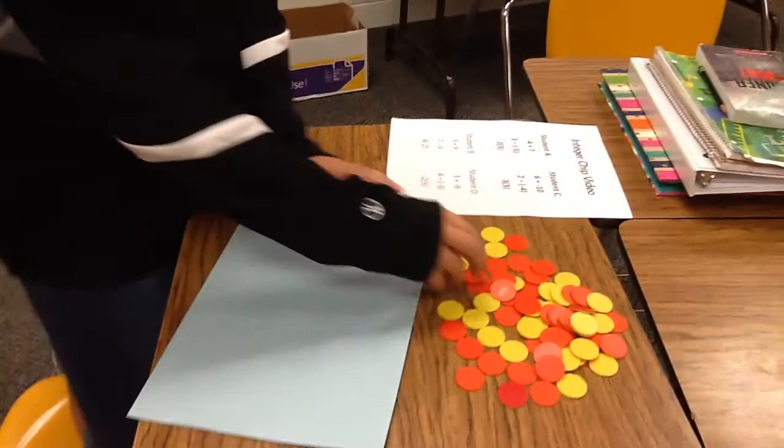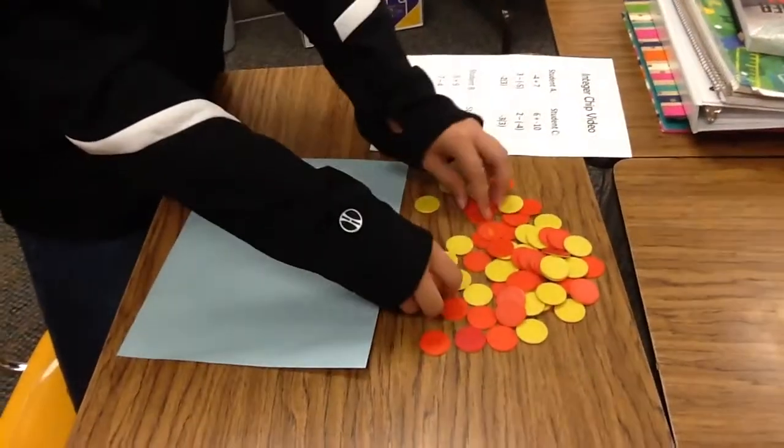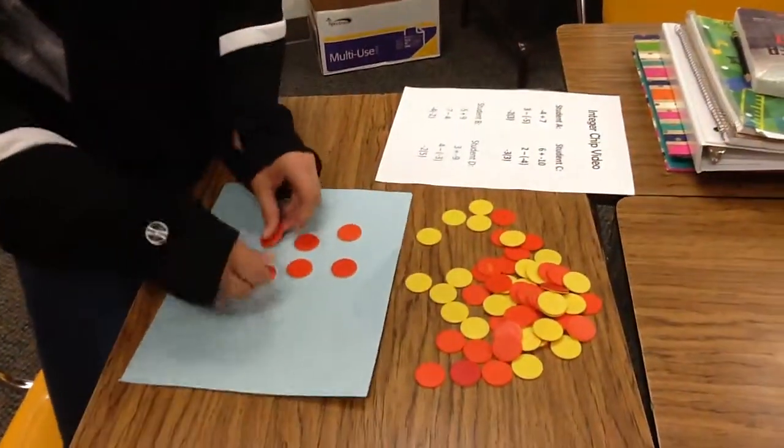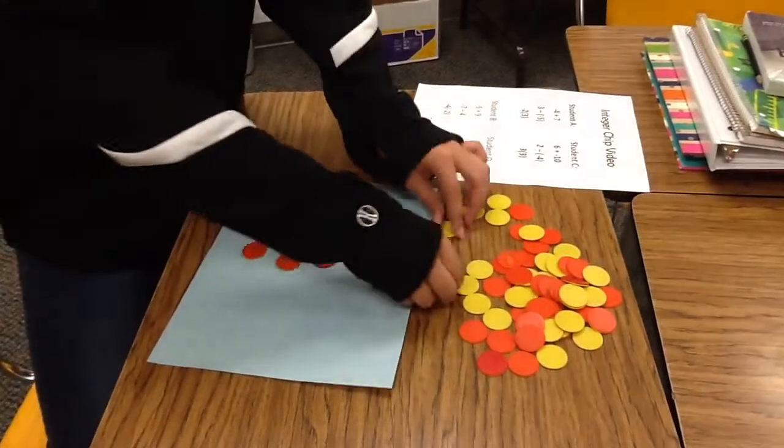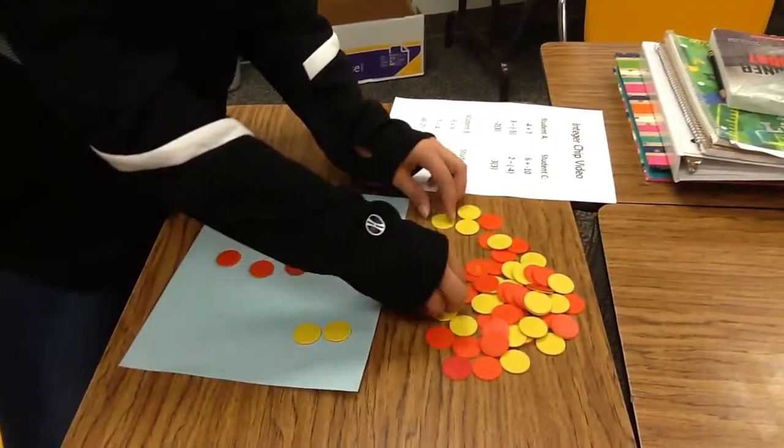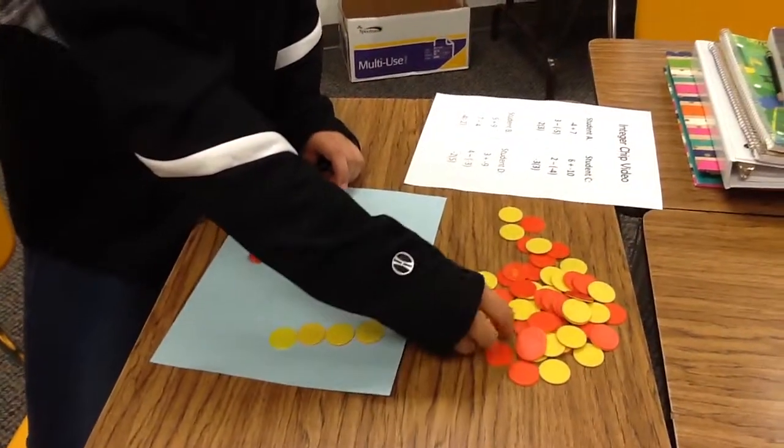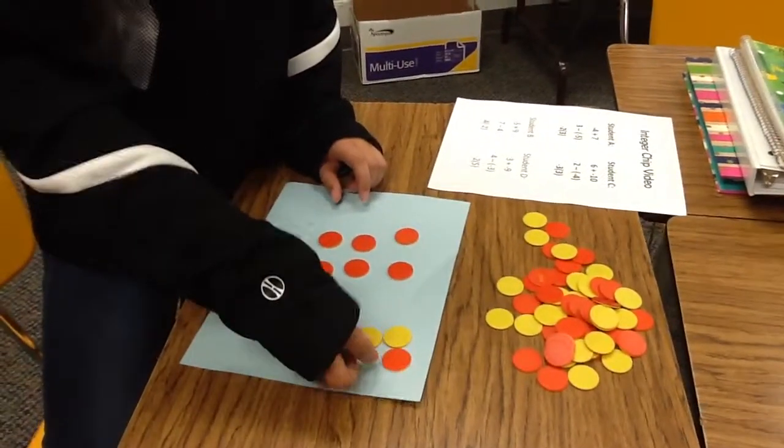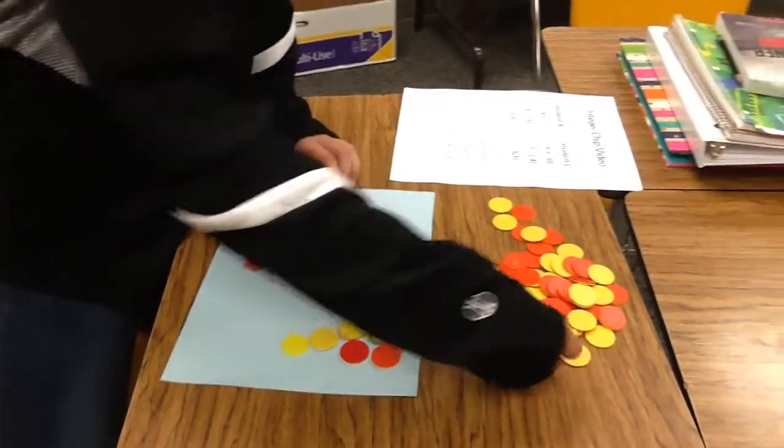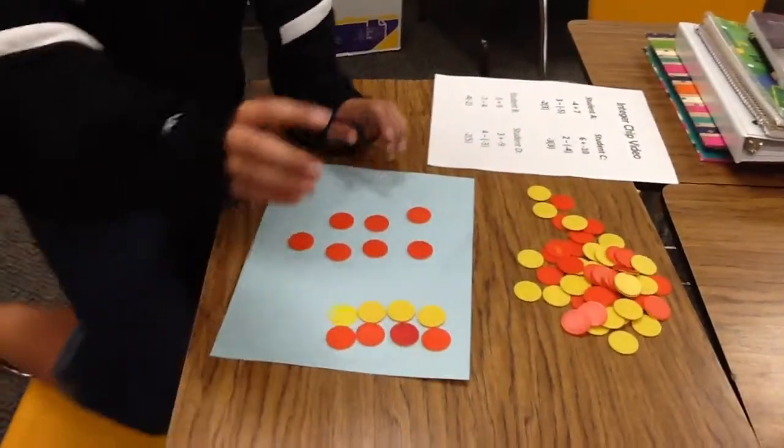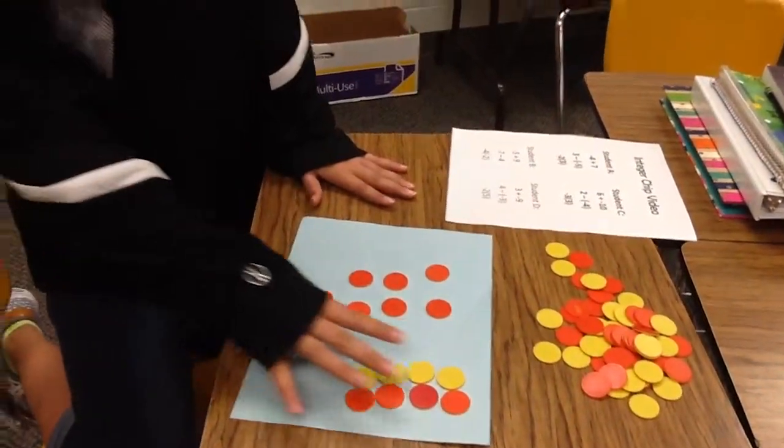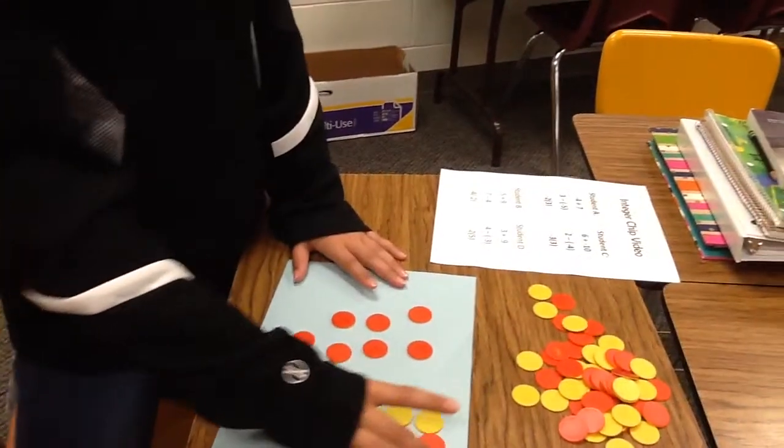The next problem is negative 7 minus positive 4, and you put four pairs of zeros on the side. So when you take away the positive chips, when you start it off...